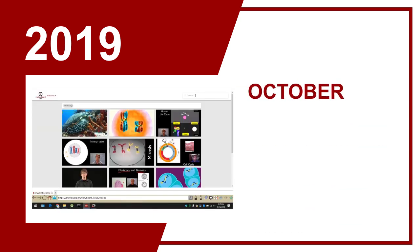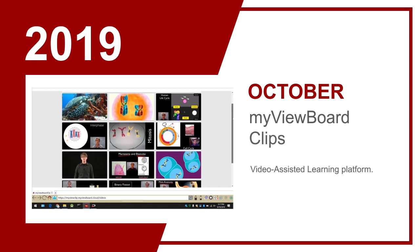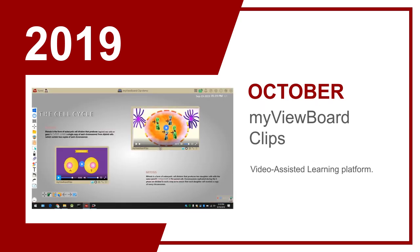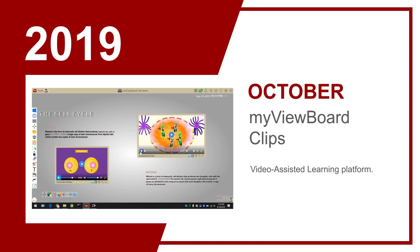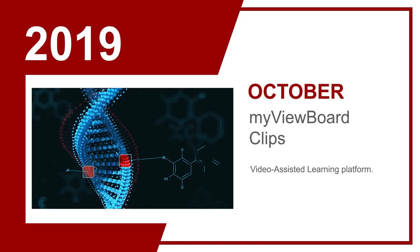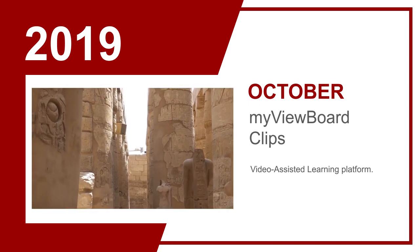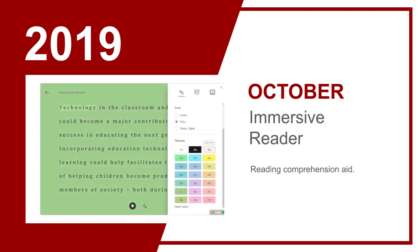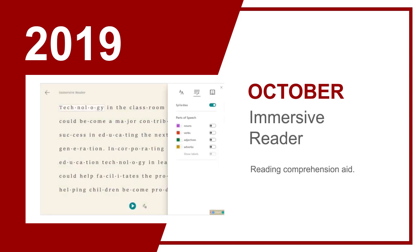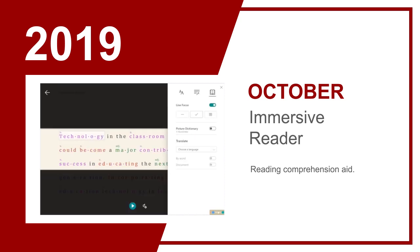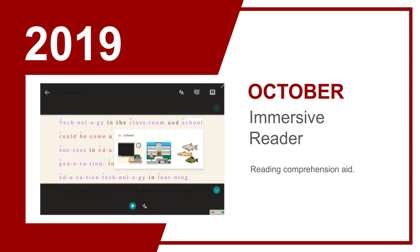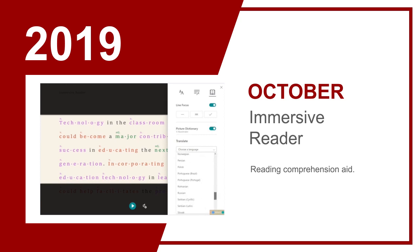In October, two big features came out. First, MyViewBoard Clips, a video-assisted learning platform that empowers teachers to accelerate and sharpen learning with educational videos. Second, Immersive Reader, a feature that improves reading comprehension for students with learning disabilities like dyslexia, children who have difficulty writing, and foreign language learners.